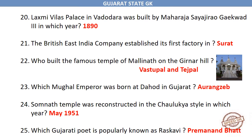Lakshmi Vilas Palace in Vadodara was built by Maharaja Sayajirao Gaekwad III in which year? 1890. The British East India Company established its first factory in Surat. Who built the famous temple of Mallinath on the Girnar hill? Vastupal and Tejpal.